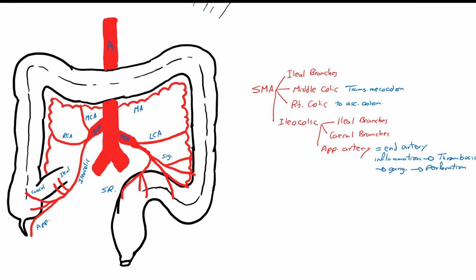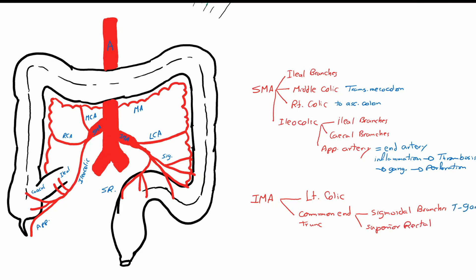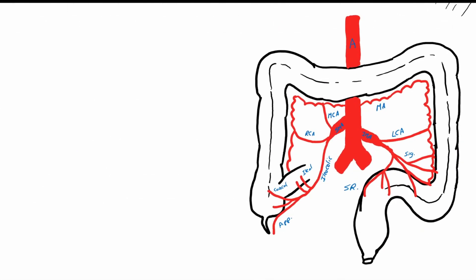There is a communication between the superior mesenteric and the inferior mesenteric artery, which is the marginal artery of Drummond. This is a long artery which runs at the mesenteric border of the colon, starting from the ascending colon through the transverse colon and ending at the sigmoidal branch. This continuous artery gives off the vasa recta, which are the arteries that supply the colon directly.